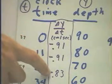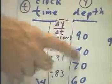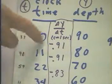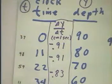Notice that we have negative signs in all of these because the depth is actually decreasing. The change in depth in each case is negative 10 centimeters, being divided by whatever time interval we obtain.